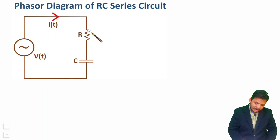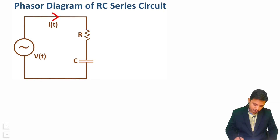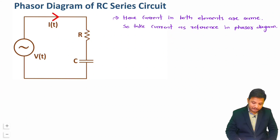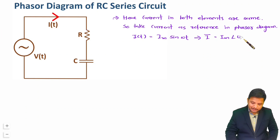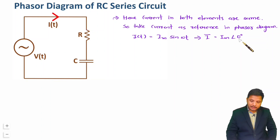In this RC series circuit, R and C are in series, and the current passing through both elements is the same. So I'll consider this current as the reference for drawing the phasor diagram. If I say current is i(t) = Im sin(ωt), in terms of phasors that is Ī = Im ∠0°, meaning the current has zero phase angle.